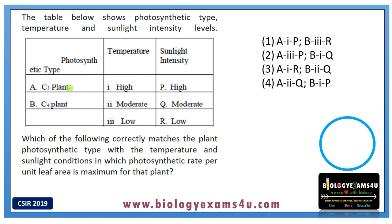As you know, a C3 plant is often a mesophytic plant that lives in moderate temperature and moderate sunlight intensity — so the matching option is A2Q. A C4 plant can tolerate 40-plus degrees, high temperature, and high sunlight intensity — so the matching option is C4-B1-P.